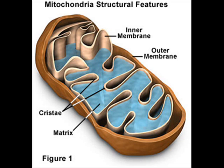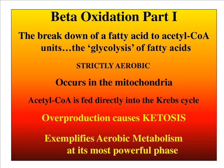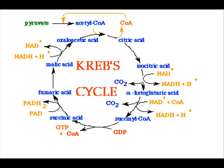It goes through the mitochondria for beta oxidation. It forms acetyl-CoA, and enters the Krebs cycle.